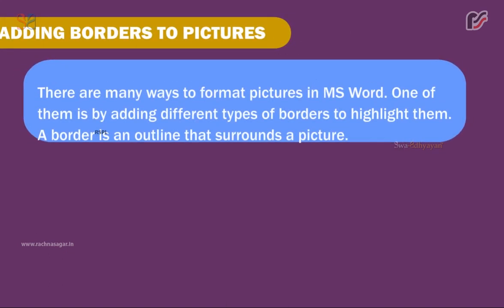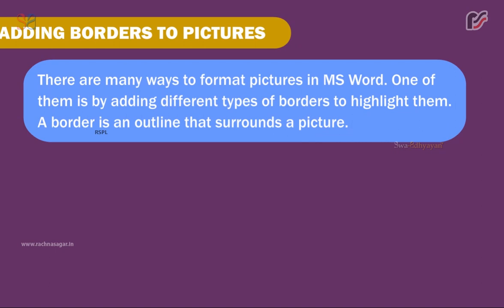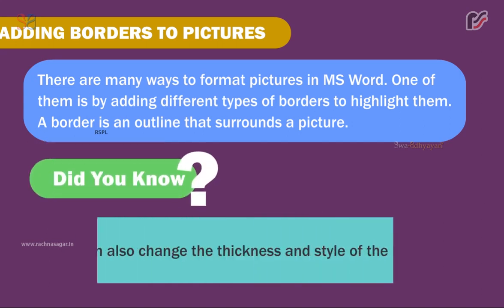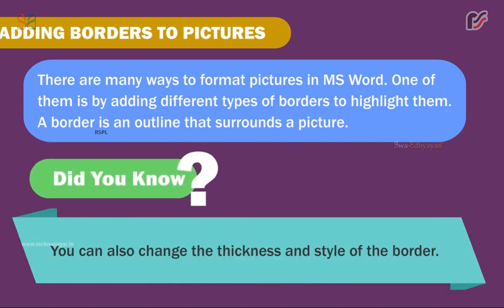Adding Borders to Pictures. There are many ways to format pictures in MS Word. One of them is by adding different types of borders to highlight them. A border is an outline that surrounds a picture. You can also change the thickness and style of the border.